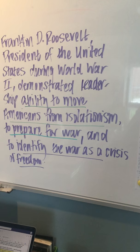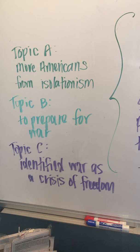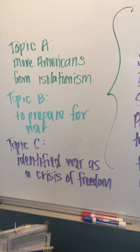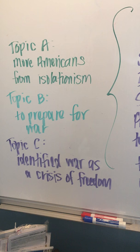Here's how you make your topics. Topic A: to move Americans from isolationism. Topic B: to prepare for war. Topic C: to identify the war as a crisis of freedom. That's what you put in each paragraph in your keyword outline.